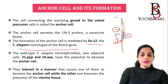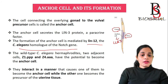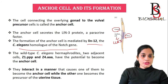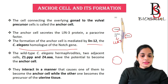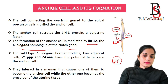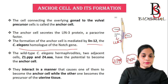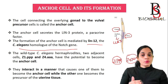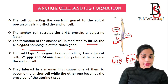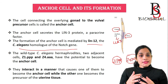The wild-type C. elegans gonad has two adjacent cells. One cell is named the Z1.ppp cell and the other is known as Z4.aaa. Both cells have the potential to become the anchor cell, but they interact in such a manner that one becomes the anchor cell and the other becomes the uterine precursor cell.